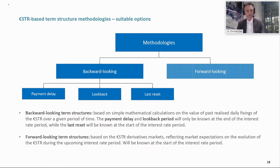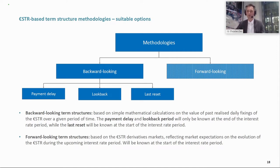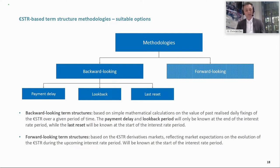An alternative — and the one chosen as ISDA's default fallback methodology — is the lookback period, where the observation period and interest period are slightly detangled. The observation period starts a number of days before the interest period, giving market participants the possibility to deal with operational settlement issues. The last reset method is a backward-looking methodology where the observation period is in the past but not the same as the interest period, allowing you to determine an interest rate in advance.